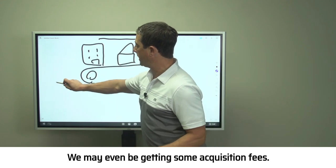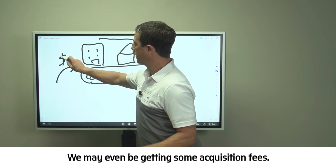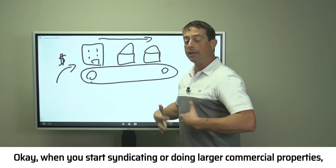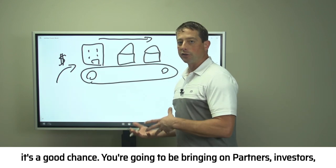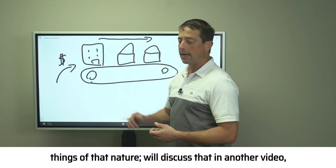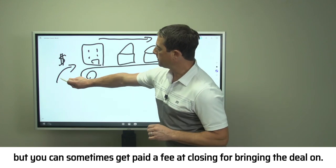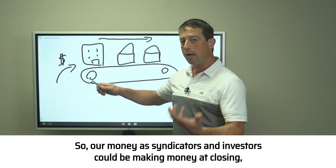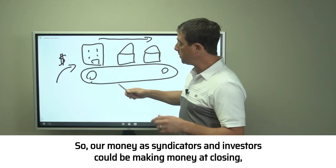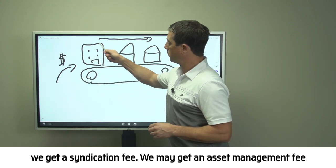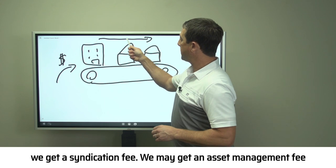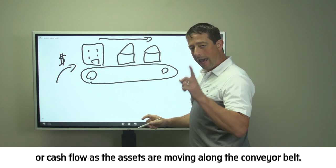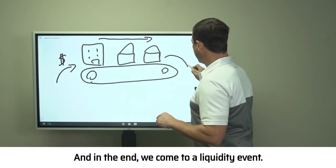We are getting cash flow as these assets move along our conveyor belt. We may even be getting some acquisition fees. When you start syndicating or doing larger commercial properties, there's a good chance you're bringing on partners and investors. We'll discuss that in another video. But you can sometimes get paid a fee at closing for bringing the deal on. Our money as syndicators and investors could be making money at closing—we get a syndication fee, we may get an asset management fee or cash flow as the assets are moving along.